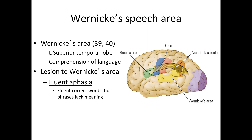Traditionally, Wernicke's area is taught as Brodmann areas 39 and 40, located in the superior temporal lobe — specifically the superior temporal gyrus. It is located in your dominant hemisphere: in 95% of right-handed people and also in 60% of left-handed people, it is in the left hemisphere.